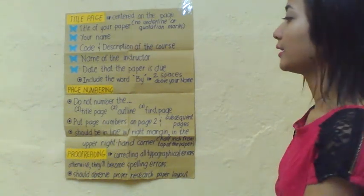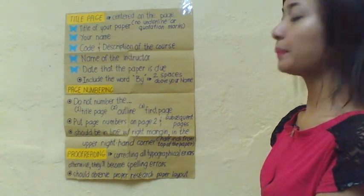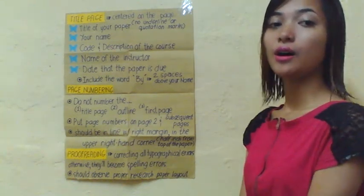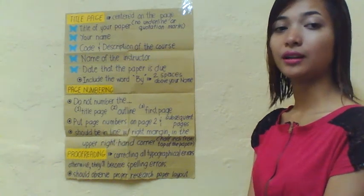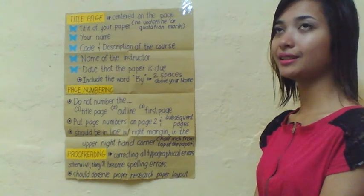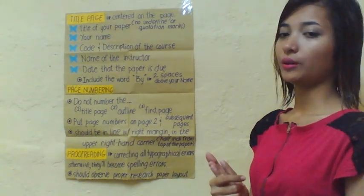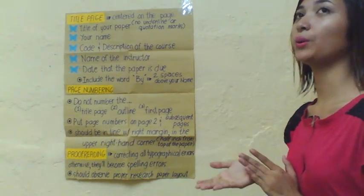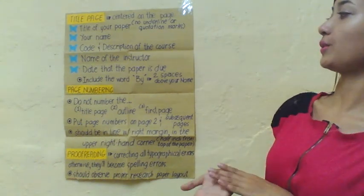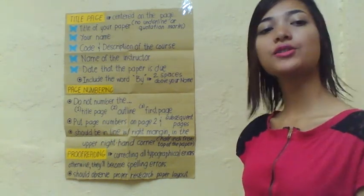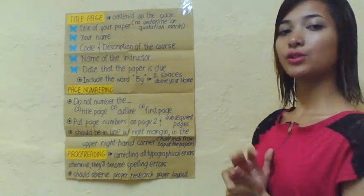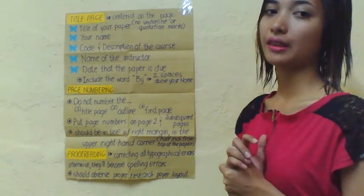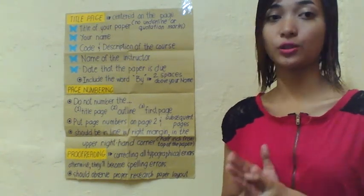Another is page numbering. We put numbering for the thesis or research writing so we can follow the sequence. There are certain rules in page numbering — there are certain pages where we do not put the page number, however those pages are still counted. For example, in a book we may already have the first, second, and third pages counted even if skipped.